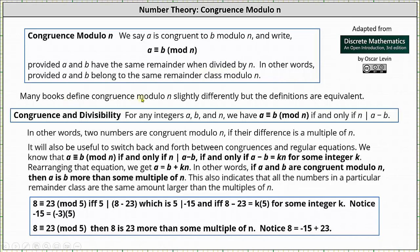Many books define congruence modulo n slightly different but the definitions are equivalent. Using congruence and divisibility we can state for any integers a, b, and n, we have a is congruent to b mod n if and only if n divides a minus b. In other words, the two numbers are congruent modulo n if their difference is a multiple of n.